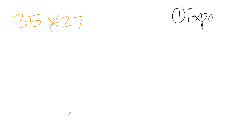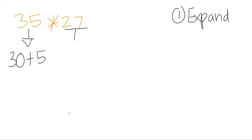Thinking about the steps is always helpful. Step one is to expand our numbers — that's how we create the array, relating this multiplication to arrays. So we expand 35 out to 30 plus 5, and then we take 27 and expand that as well to 20 plus 7.